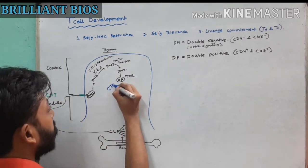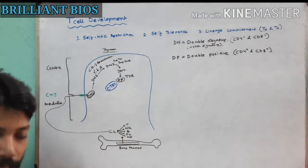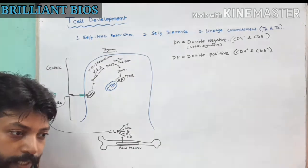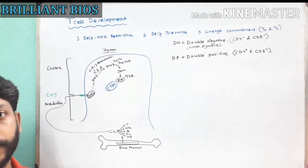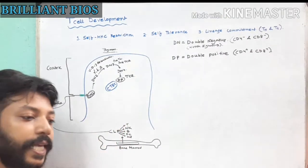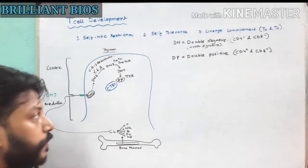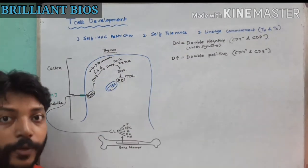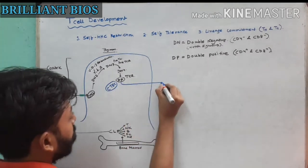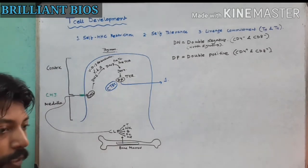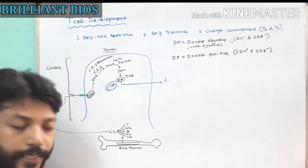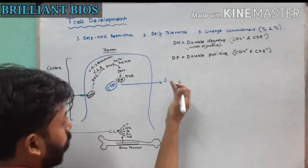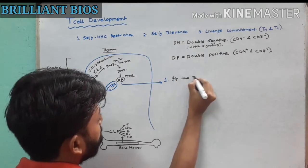In the cortex there are epithelial cells called cortical thymic epithelial cells, or cTECs. These cells present self-antigens with the help of class 1 and class 2 MHC molecules. So cTEC cells express both class 1 and class 2 MHC with self-antigen. The double positive cell now gives examinations — it must meet the three terms and conditions. During VDJ recombination, many T cell receptors are produced that do not recognize the self-MHC molecule.